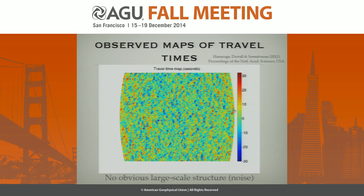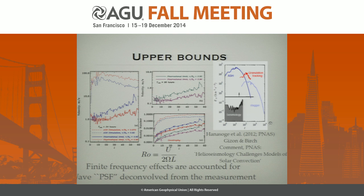Almost completely consistent with noise — there's some slight component that isn't. The measurement of what deviates from noise is an estimate of the properties of convection in the sun. We do a great deal of statistical analysis and can place stringent upper bounds on convective motions in the interior. The red curve here indicates an upper bound on convective flows 28,000 kilometers below the surface — the solar radius is 700,000 kilometers, so it's fairly close to the surface.